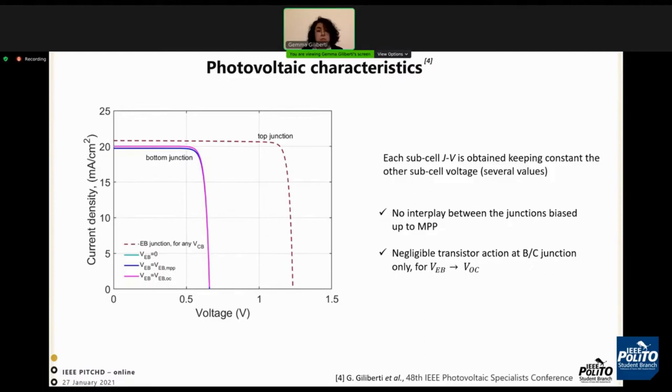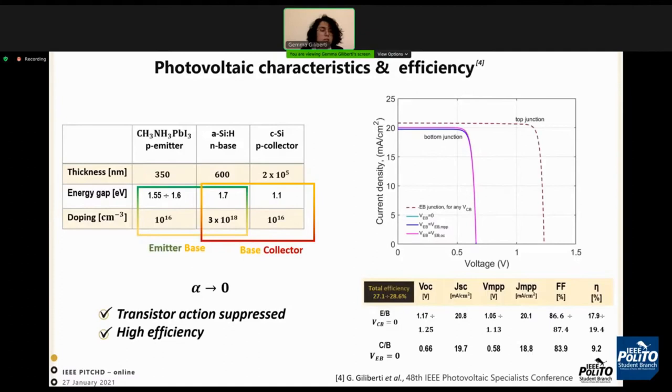The transistor effect is absolutely negligible. The solar cell achieves a high efficiency ranging between 27.1 and 28.6 percent, depending on the radiative coefficient and the energy gap of the perovskite layer.